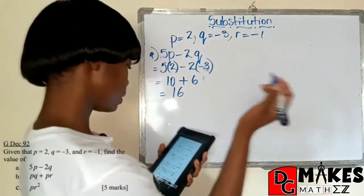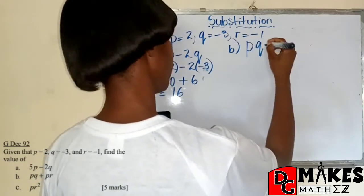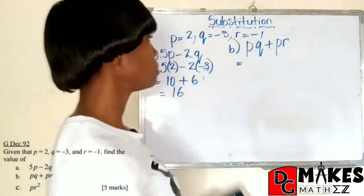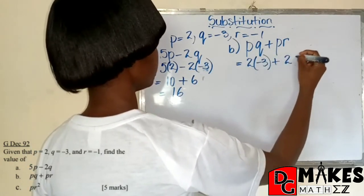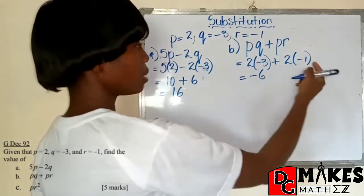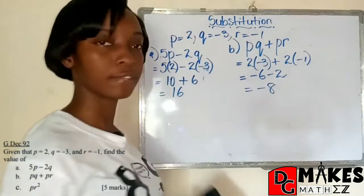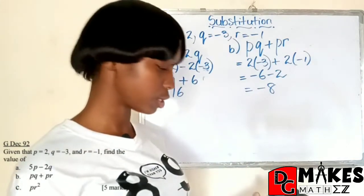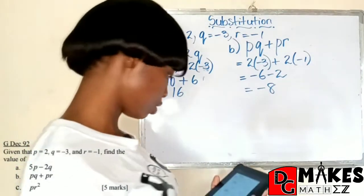All right, easy peasy. We move to part B, which says we are finding the value of PQ plus PR. So again, that's P times Q plus P times R. So that's going to be 2 times negative 3 plus 2 times negative 1. 2 times negative 3 is going to be negative 6. 2 times negative 1 will give us negative 2. And our final answer would be negative 8. So as we can see, it's pretty simple once we understand what the expression is saying and if we can multiply integers properly.